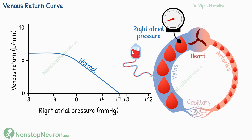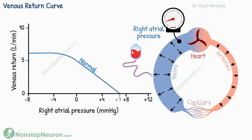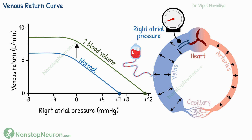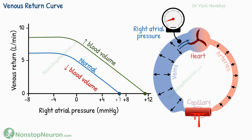Now let's see what happens if blood volume is increased. With increased blood volume, the tightness in the vessels increases, raising the baseline pressure when the pump is off — meaning an increase in mean systemic filling pressure. As pump speed increases, right atrial pressure decreases and venous return increases, reaching a higher plateau because more blood creates more pressure in the veins. Thus, the curve shifts upward when blood volume increases. At lower blood volumes, the opposite occurs — mean systemic filling pressure decreases and the curve shifts downward.